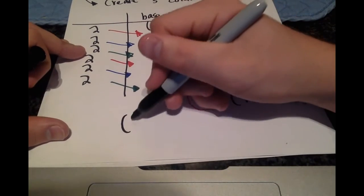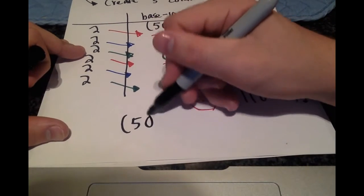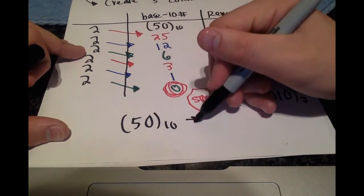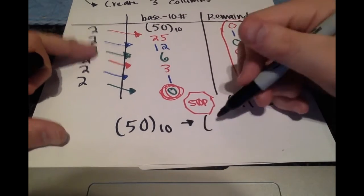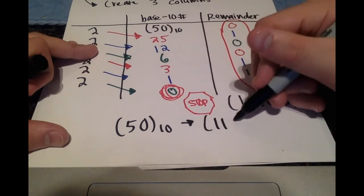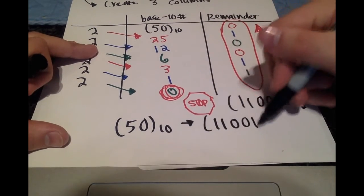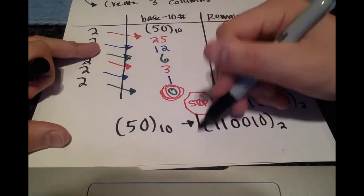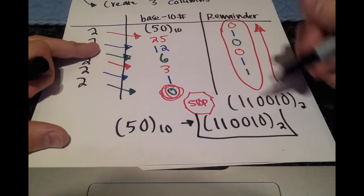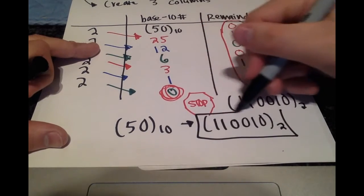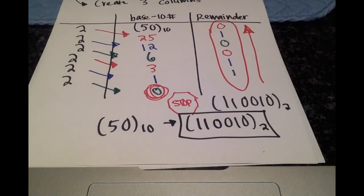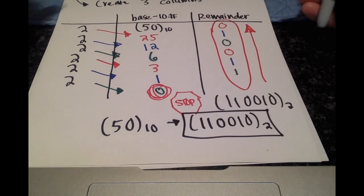Rewrite it as 1 1 0 0 1 0 with a subscript 2, which indicates base 2. So now we can write the whole thing: 50 base 10 is equal to 110010 base 2, and that's pretty much all there is to it.